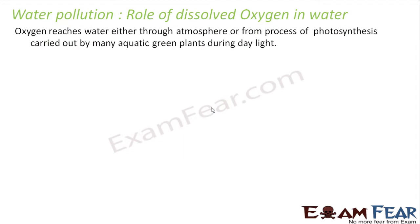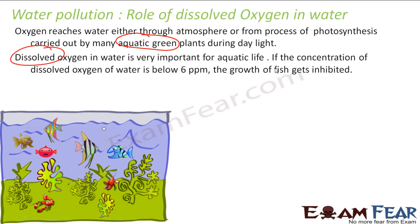Before we talk about those pollutants, understand the role of oxygen in water. Dissolved oxygen has a critical role — because of dissolved oxygen, aquatic plants and aquatic animals survive in water. If the concentration of dissolved oxygen is less than 6 parts per million, the growth and life of aquatic animals will be endangered, so it must be more than 6 ppm. Dissolved oxygen reaches the water through the atmosphere or from photosynthesis carried out by aquatic green plants during the day.